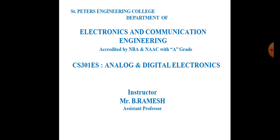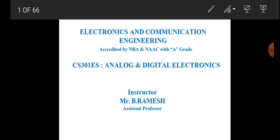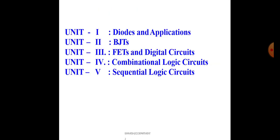That is why this subject is included in your course. This is the introduction to analog and digital electronics. This subject has a total of five units. The first unit is Diode and Applications, the second unit is Bipolar Junction Transistors (BJT), and the third unit is FETs — Field Effect Transistors.